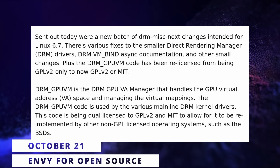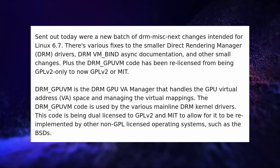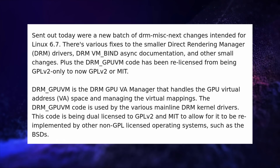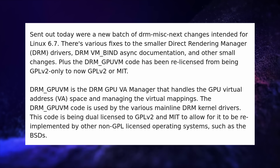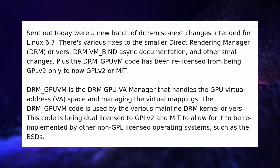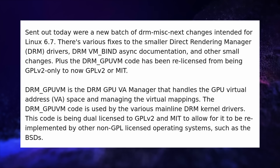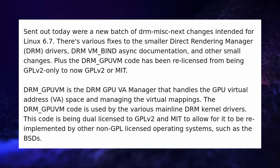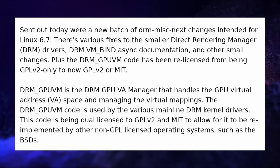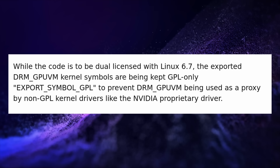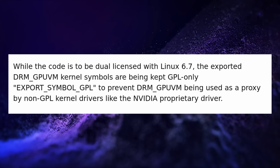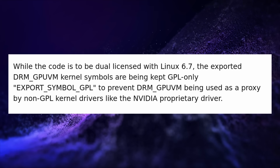Now for our weekly update on drivers and performance improvements. We have a nice change to the Direct Rendering Manager drivers, or DRM — but the good kind of DRM, not the stuff that locks everything down. These drivers will get a few improvements in Linux kernel 6.7, but more interestingly, they're getting re-licensed with a dual license: GPLv2 and the MIT license. The goal is to let these drivers be implemented in other non-GPL systems like various BSDs. However, to prevent abuse from certain manufacturers — hello NVIDIA — the kernel symbols used by these drivers will be kept GPL only, so non-GPL drivers cannot take advantage of them, something NVIDIA has tried to do repeatedly in the past.